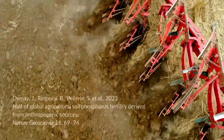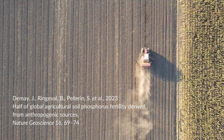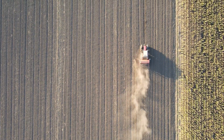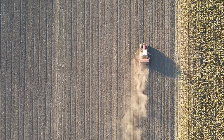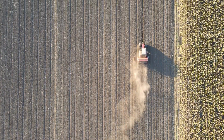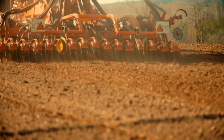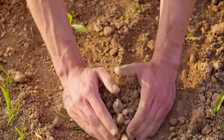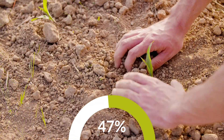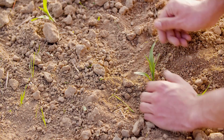In a study published in Nature Geoscience, researchers developed a model to analyze soil phosphorus dynamics and its impact on agricultural soil fertility from 1950 to 2017. They aimed to quantify the contribution of anthropogenic phosphorus originating from mineral phosphorus fertilizers to agricultural soil fertility. The study revealed that, by 2017, approximately 47% of available phosphorus in global agricultural soils was attributed to anthropogenic sources.